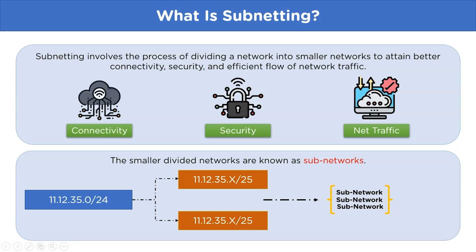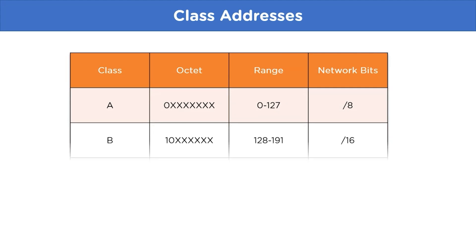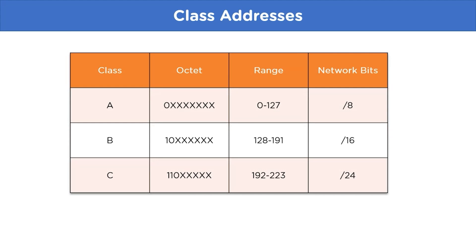Now that we understand what subnetting is, let's move on to class addresses and subnet mask. To better understand subnetting we need information about different classes used in IP addressing. The first class is Class A with a range of 0 to 127 and network bits of /8.